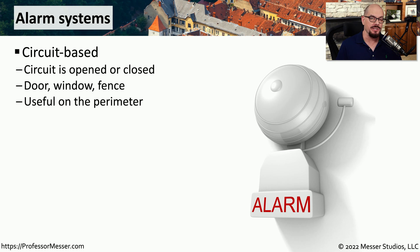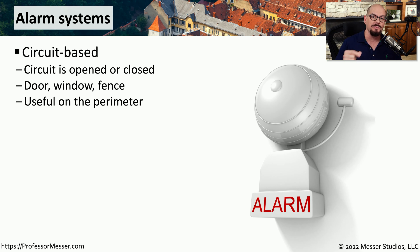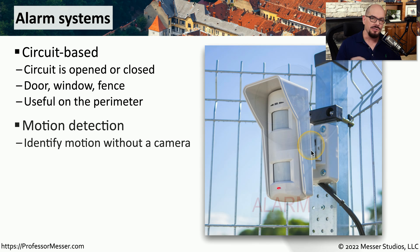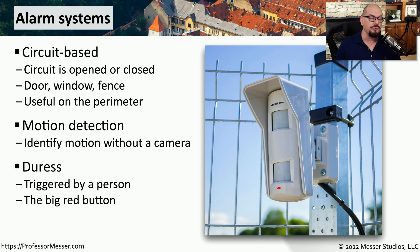It's also common to have alarm systems that may be protecting against any changes to your environment. For example, you might have a monitor on a door or window, and when that door or window is opened, the circuit is broken and it sends a signal back to the monitoring system that someone has moved or changed that door or window. You can also combine this with motion detection so it can wait for someone to walk through a particular area before sending an alarm. Or the alarm might be triggered by duress — a person would push a red button to signify that there is an event occurring that needs additional security.